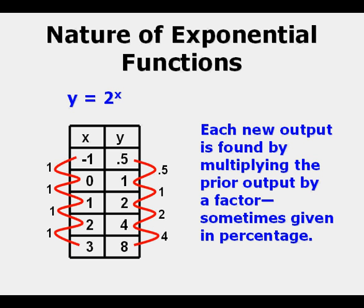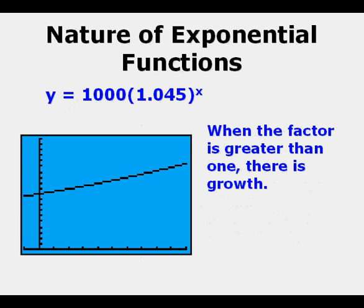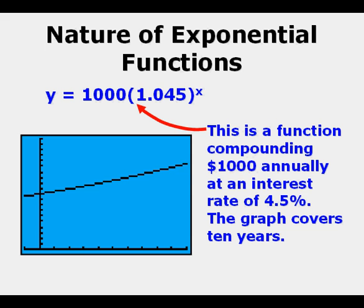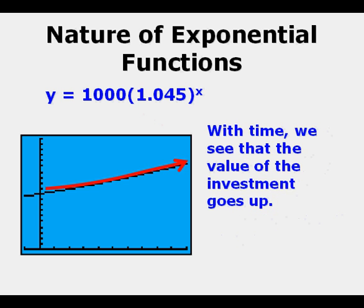When the factor is greater than 1, or the base greater than 1—in this case 1.045—there is growth. Over a short enough span, an exponential function can appear to be linear. This is a function compounding $1,000 annually at an interest rate of 4.5%. The graph covers 10 years. With time, we see that the value of the investment goes up.